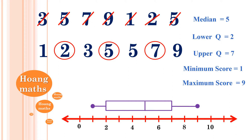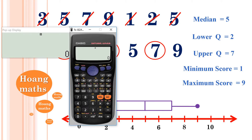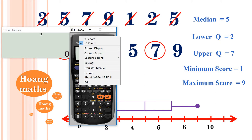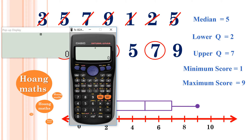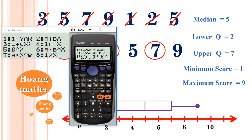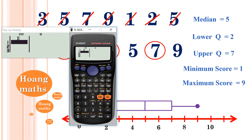You can also use a calculator to find all these values. You don't have to rearrange the data — the calculator does it for you. To enter statistics mode, press Shift and 2, then select one-variable option 1. Enter the scores: 3, 5, 7, 9, 9, 1, 2, 5.